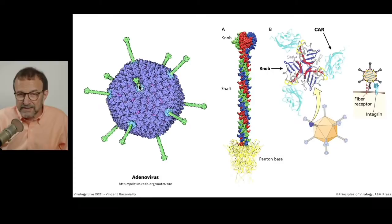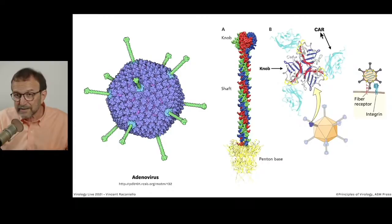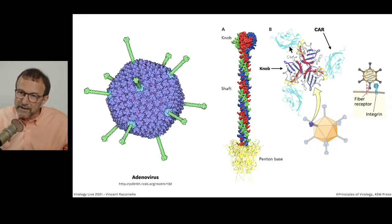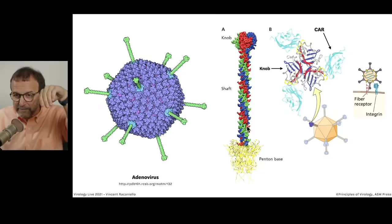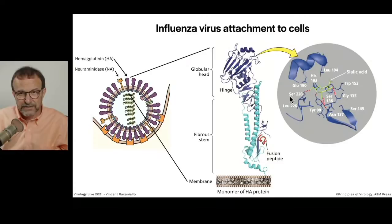Here's another example of non-enveloped virus attachment — adenovirus, which has unique fibers at the five-fold axes of symmetry. The fiber is where attachment occurs. The fiber is an elongated trimer with a knob at the top, and the knob fits onto the cellular receptor. One of the two receptors for adenovirus is CAR — Coxsackie adeno receptor, also called the fiber receptor because it's the protein to which the fiber binds. Looking down on CAR, you can see the trimeric knob fitting beautifully onto CAR.